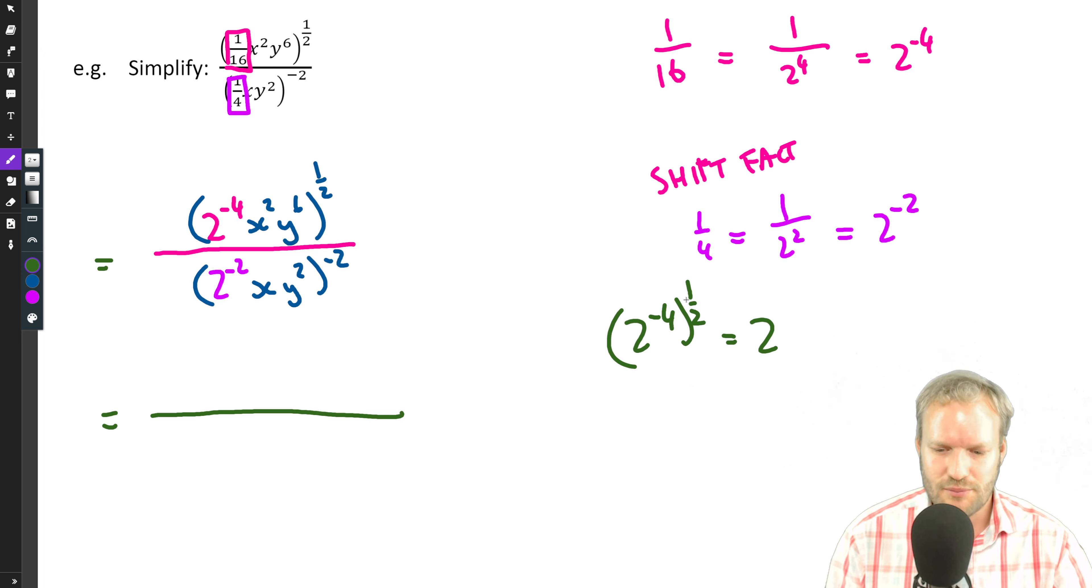So negative four times a half is negative two, so that becomes two to the negative two. And maybe you can see whether this is going to help us when we've simplified the denominator. Okay, the rest we've done quite a bit of already.